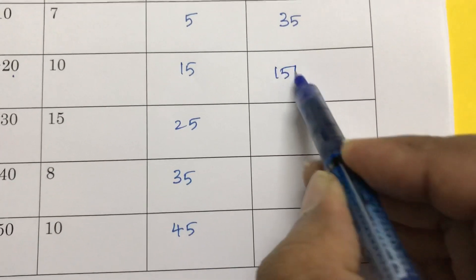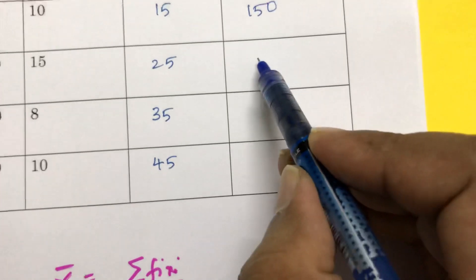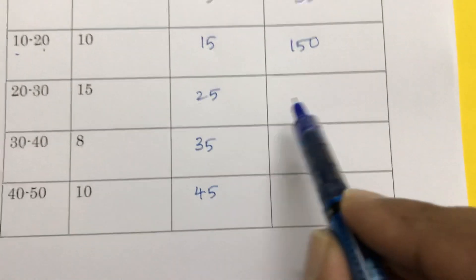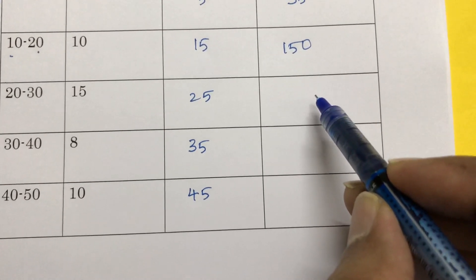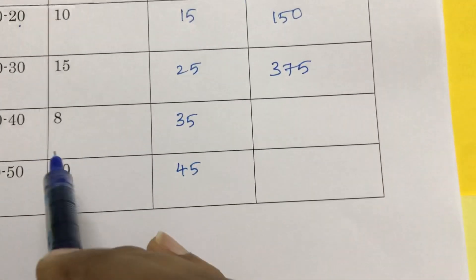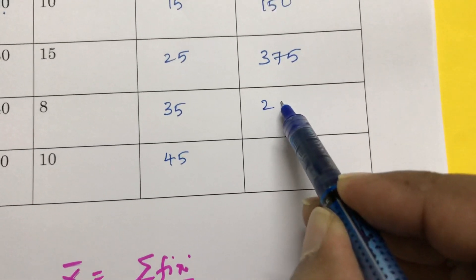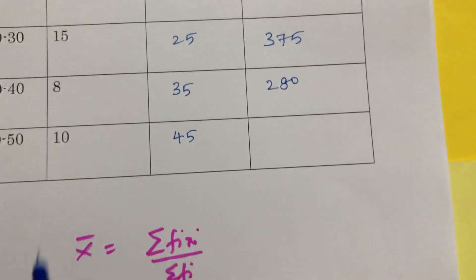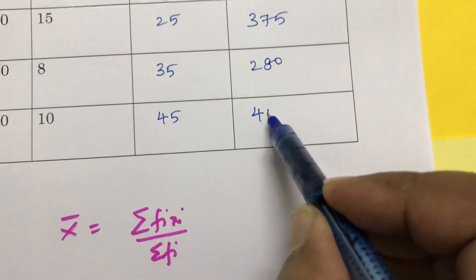10 times 15 is 150. 15 into 25, that is 375. 8 into 35: 240 plus 40 is 280. 10 into 45 is 450.